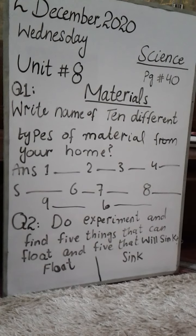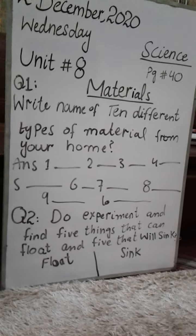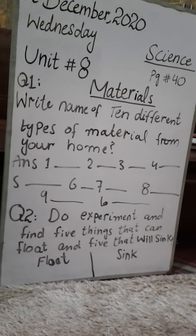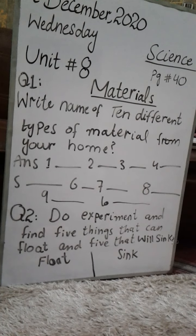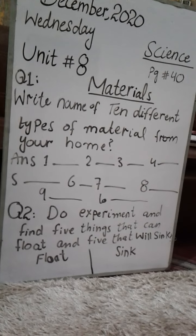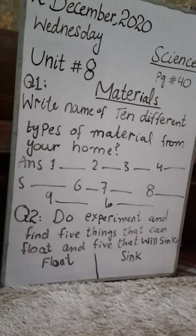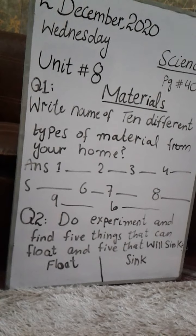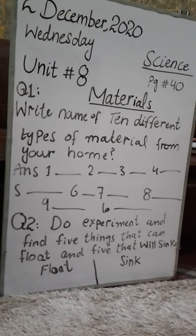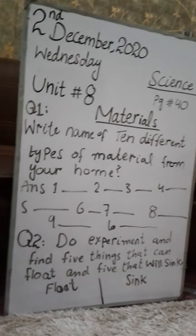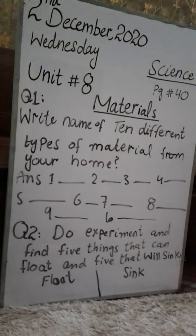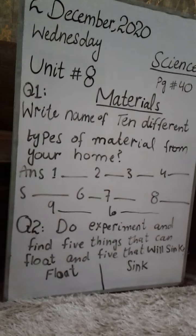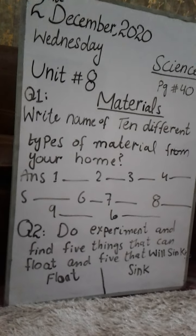Question number 2: do an experiment and find 5 things that can float and 5 that will sink. As I demonstrated in the video, I brought some water bottles and put a few things in them. You saw some objects sinking in the water and some floating on the water. You also have to randomly take some objects — ones that won't get lost or damaged. This is not that you take the TV remote and throw it in the water and then get punished — it's not like that.